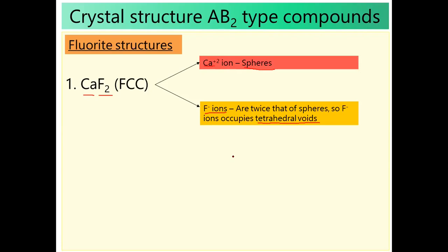If you have 4 calcium atoms, there should be 8 fluoride ions. Coordination numbers should be different. A bulkier ion has a larger surface area, so more surface area means more coordination number. Calcium has more coordination number, fluorine has less. One sphere is connected to 8 tetrahedral voids; one tetrahedral void is connected to 4 spheres. Coordination number is 8×4 for the fluoride structure.